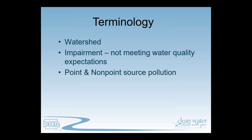Another term is point and non-point source pollution. Point source pollution is anything that requires a permit — a permitted release of water containing a pollutant. A good shorthand is that you can point to it, like a pipe. Non-point source is everything else — anything that doesn't require a permit, usually coming in a diffuse manner, such as water running off your lawn or farm field carrying a pollutant. In this watershed, we have no point sources, only non-point sources.